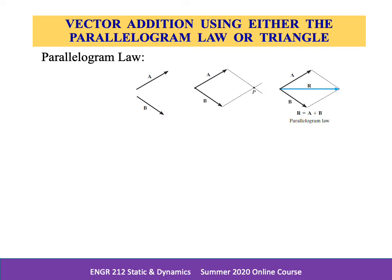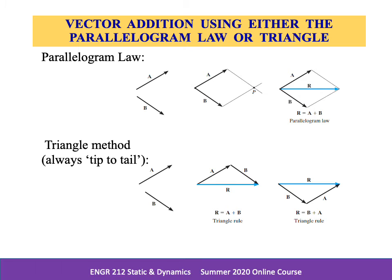First, we join the tail of the components to a point to make them concurrent. From the head of b, draw a parallel line to a. Draw another line from the head of a that is parallel to b. These two lines intersect at the point p to form the adjacent sides of a parallelogram. The diagonal of this parallelogram that extends to p forms r, which is representative of the resultant vector r equal to a plus b, as shown in the topmost figure.